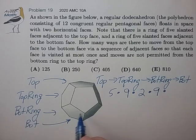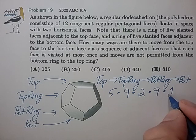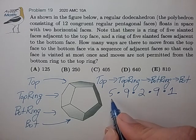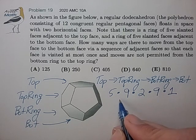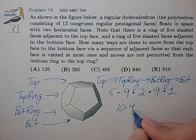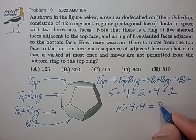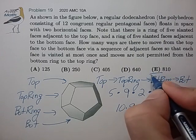Now once we're done going around the bottom ring, there's only one way to get to the bottom face. So we have a factor of one. So we just have to multiply the number of choices available at each of these steps. 5 times 9 times 2 times 9 times 1 equals 810, choice E.